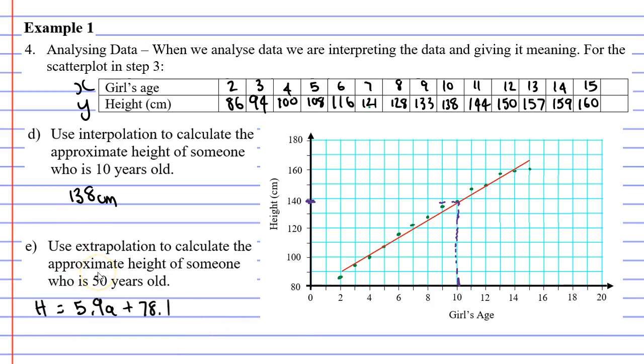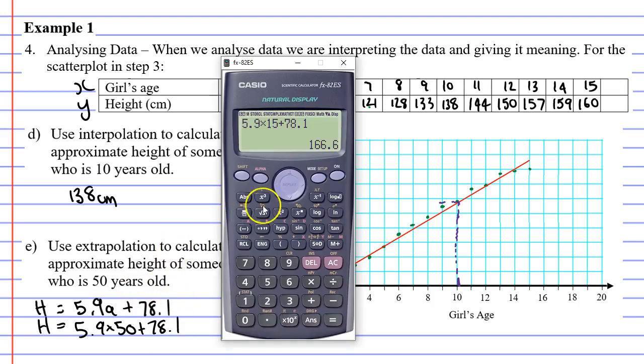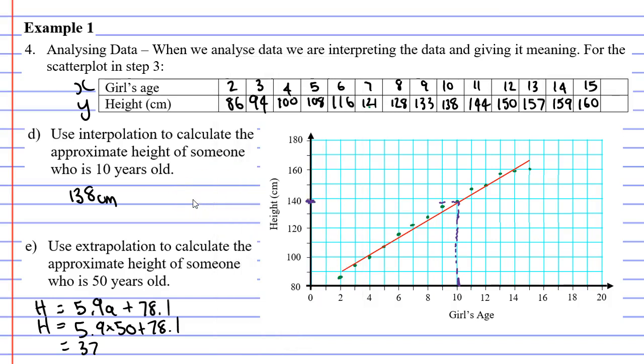And we're going to substitute A, or our age, with 50, because we're looking at a 50 year old. So bringing up our calculator, we're going to go 5.9 times 50 plus 78.1. And it comes out to a whopping 373.1 centimeters tall. And basically what we've done is we've predicted the height of a 50 year old to be close to 4 meters, which is really tall.